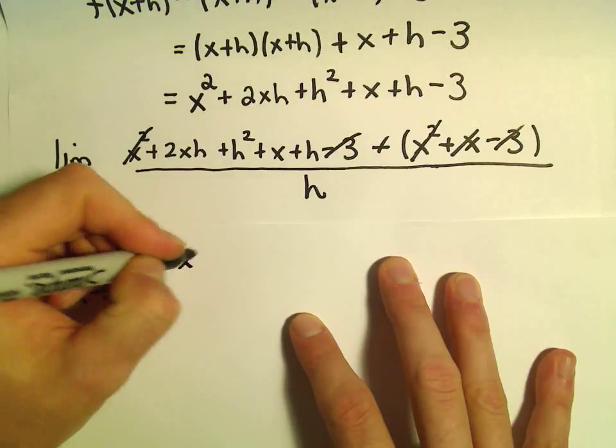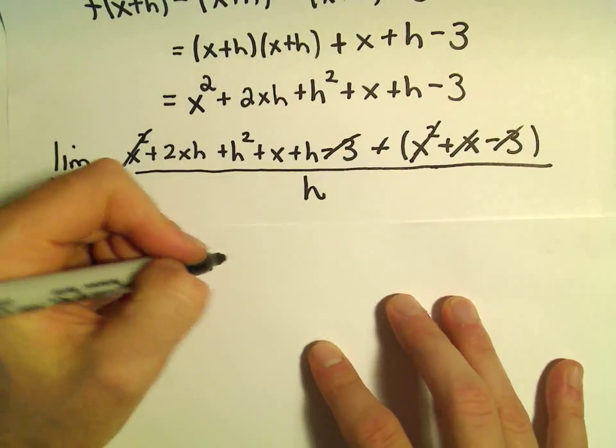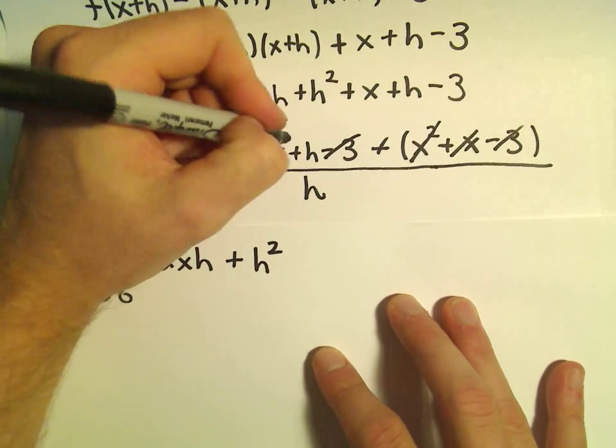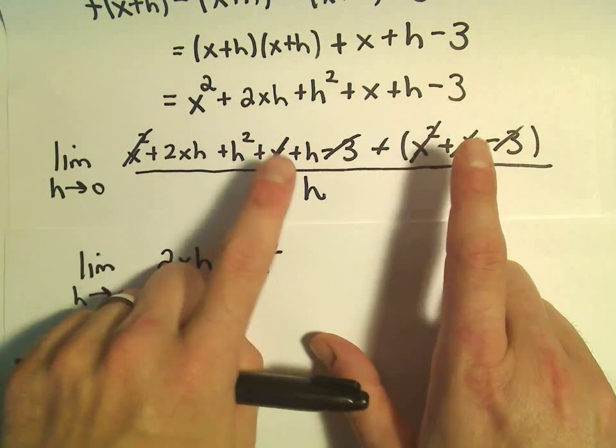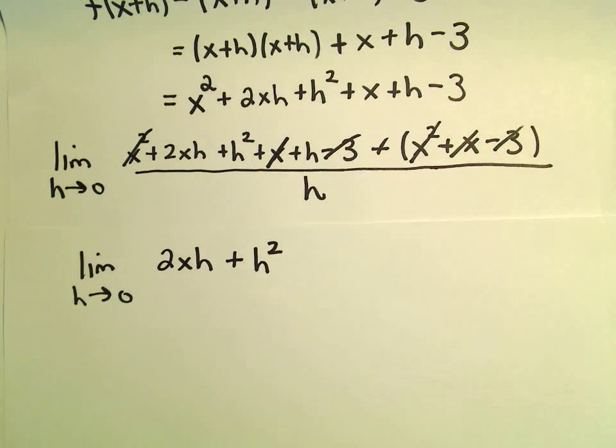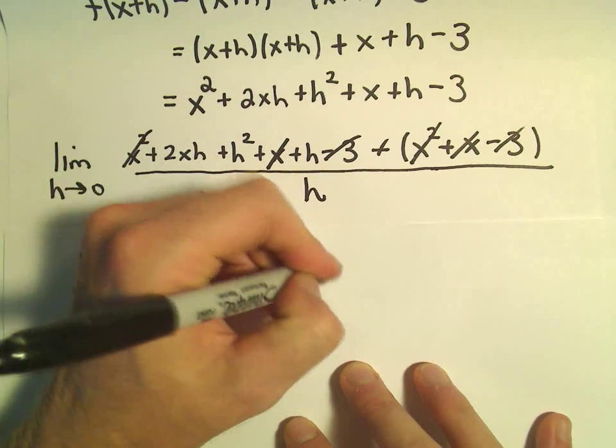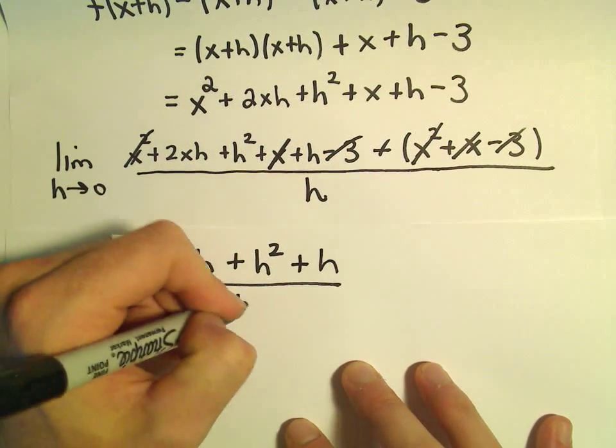So just kind of doing a couple steps there at once. Then we're left with 2xh plus h squared. I forgot to cancel out my x. Okay, so the x squared's canceled. The x's would cancel, and the 3's, the negative 3's, would cancel out. Okay, so we're left with 2xh plus h squared plus h all over h.